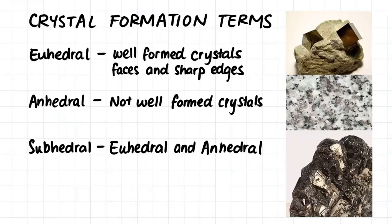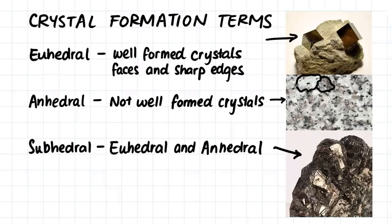Euhedral, anhedral, and subhedral are terms used to describe how crystals have formed within an igneous rock. Euhedral means the crystals are well-formed with clear faces and sharp edges — here we can see a euhedral crystal. Anhedral crystals are the opposite, where the crystal is not well-formed, though we can still see the boundaries between different crystal grains, as shown in this image. Subhedral describes rocks where the crystal structure is euhedral at times and anhedral at other times, as we can see in this rock here.